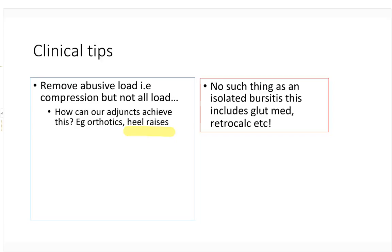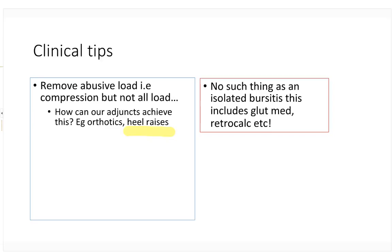There's no such thing as an isolated bursitis. The tendon and the bursa are so intimately related that if you have a diagnosis of gluteus medius bursitis, you have glute med tendinopathy. Interventions that only address the bursa in the short term — like cortisone — unless we address the compression and the issue around the tendon, these problems come back.